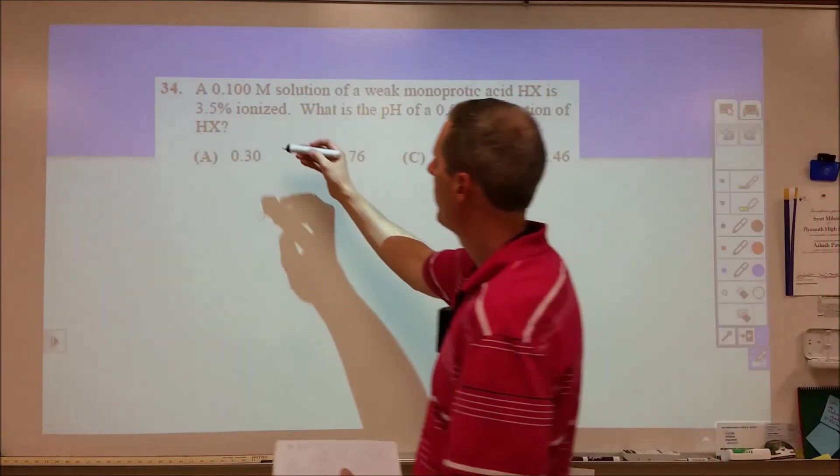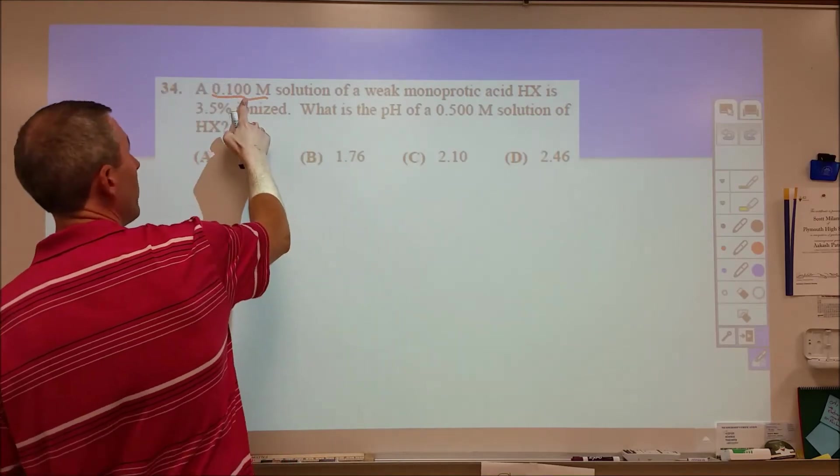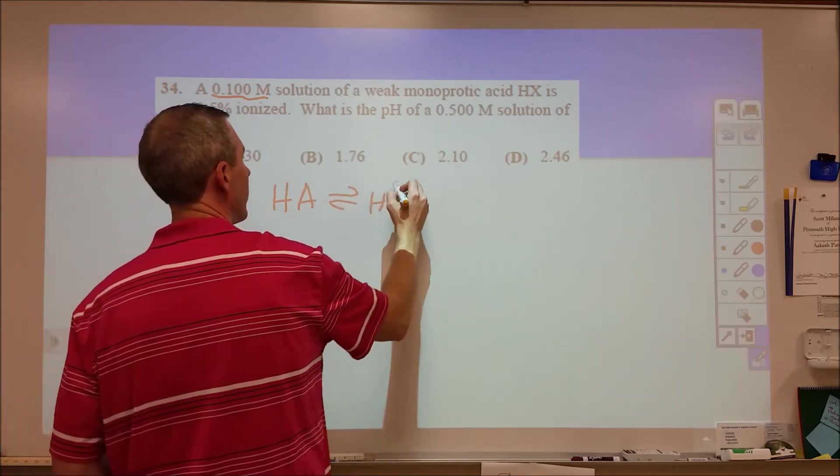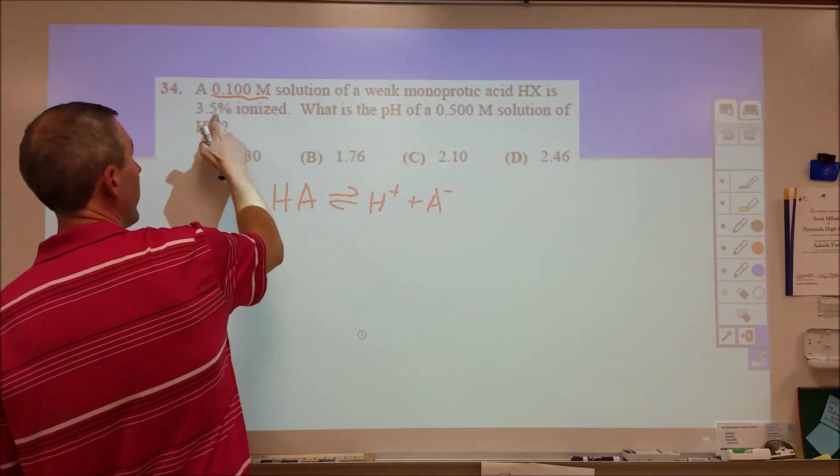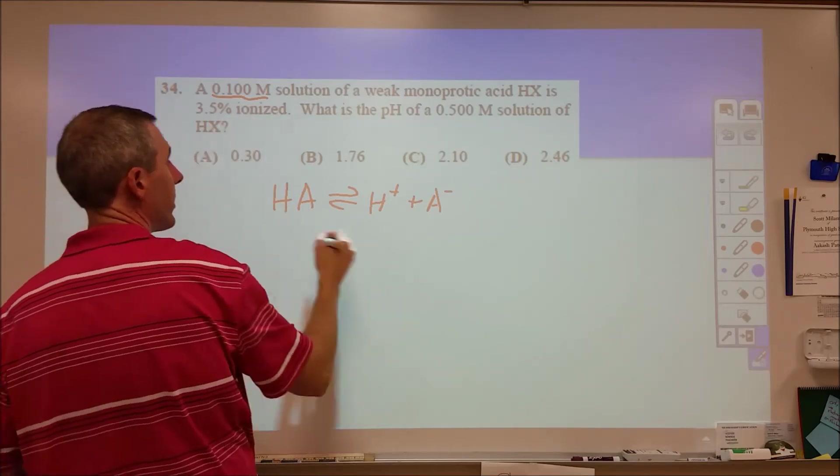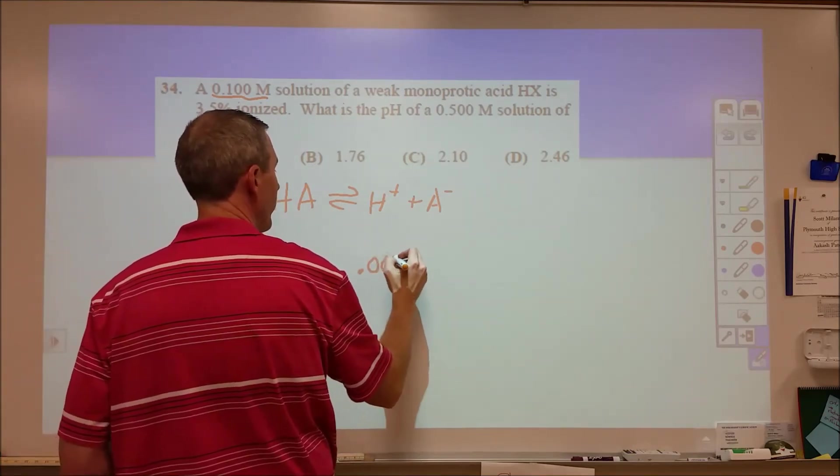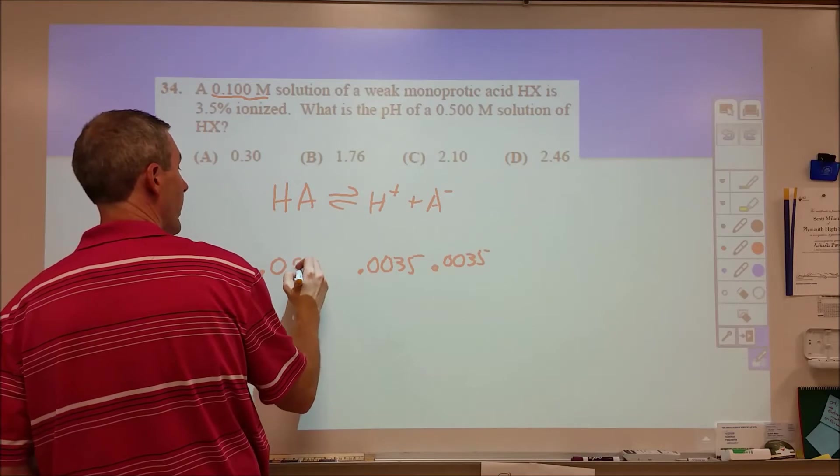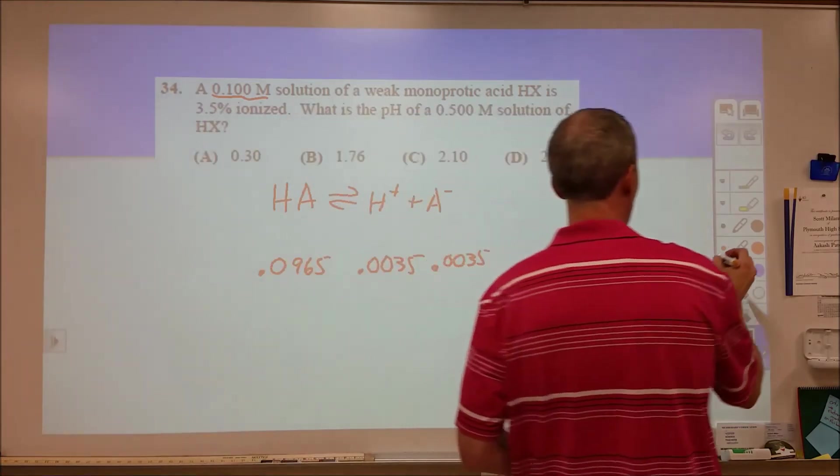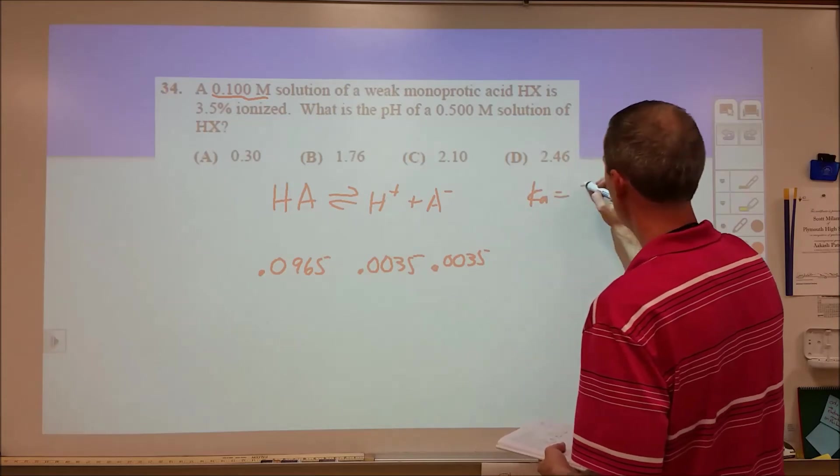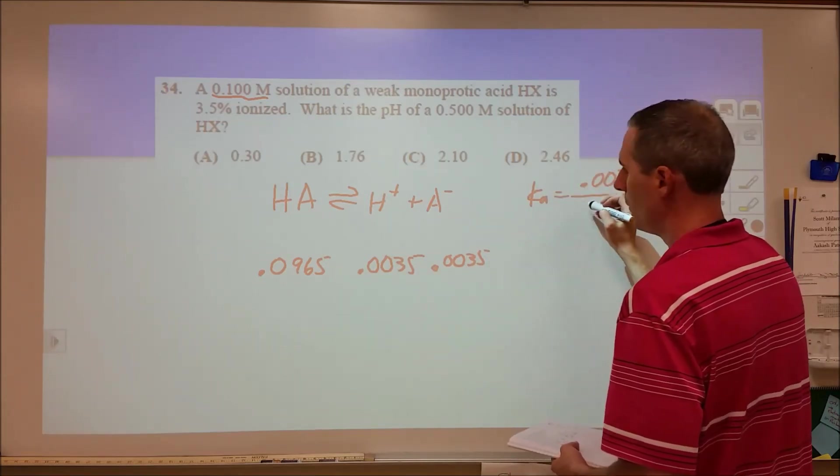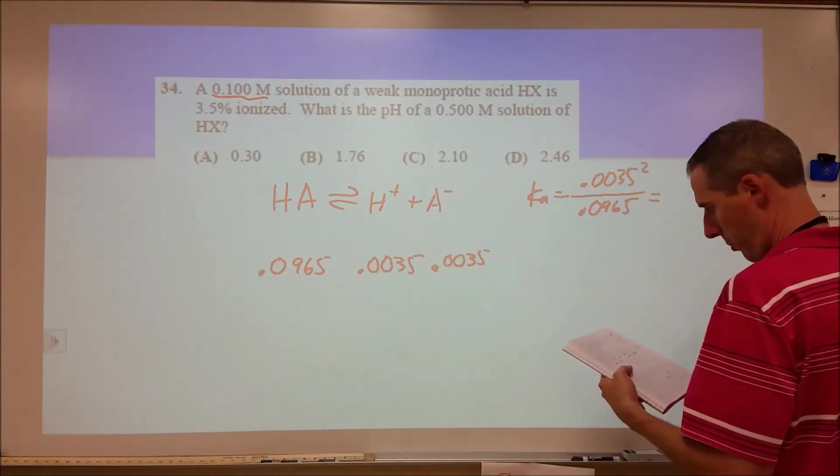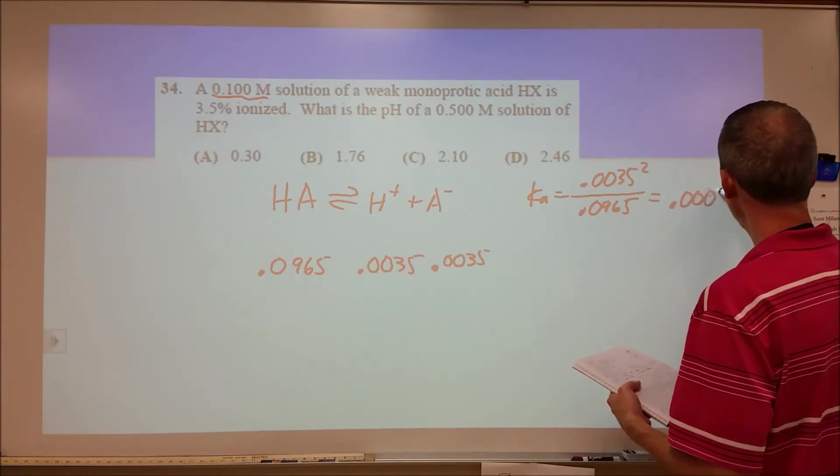This one I ended up doing wrong. I didn't notice it said a 0.1 molar solution. But 0.1 molar and 3.5% ionized, so let's start by figuring out our Ka. If we're 3.5% ionized at equilibrium, we have 0.0035 of both of these, and 0.0965 of this. So our K can be found by plugging in 0.0035 squared over 0.0965, which comes out to be 0.000127.